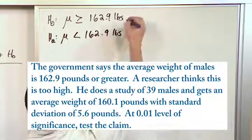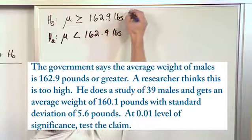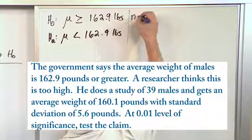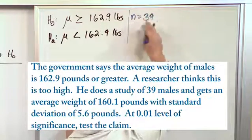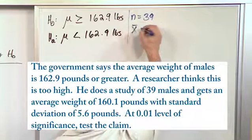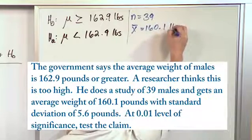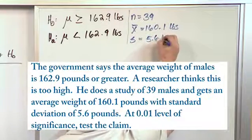All right, so what does the researcher do? He thinks that this number was too big. That's why we have a left-hand arrow like this. So he grabs as many people as he can. He's not very, he's not a very hard worker. He can only get 39 people to weigh themselves. And they get an average value of these people of 160.1 pounds, and a sample standard deviation of 5.6 pounds.